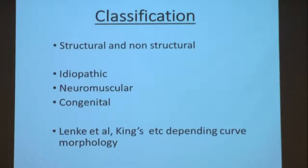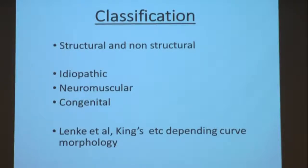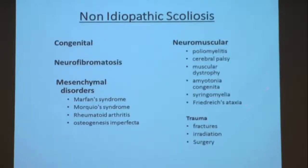How do you classify scoliosis? Structural means more than 50 degrees, not flexible, not coming less than 25 degrees even on bending films — that is a structural or major curve. Non-structural or compensatory curves become less than 20-25 degrees on bending. There could be one or more structural curves. Etiologically, it could be idiopathic or non-idiopathic; non-idiopathic could be congenital or acquired — including neuromuscular, paralytic in CP or polio, Marfan syndrome, iatrogenic, infection, or unequally healed fractures.